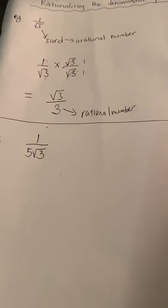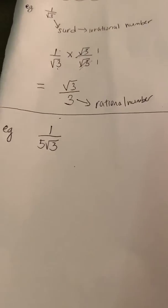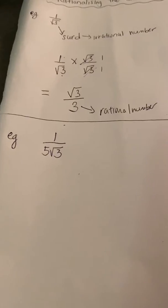Now, let's look at another example of rationalizing the denominator of thirds. In this example, I have 1 on 5 root 3.